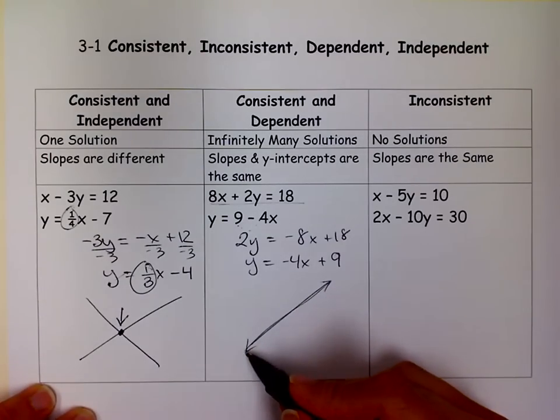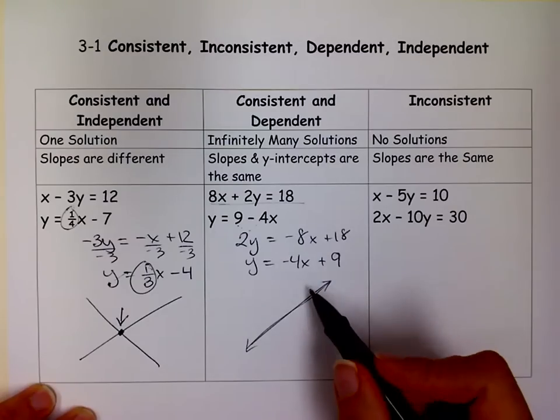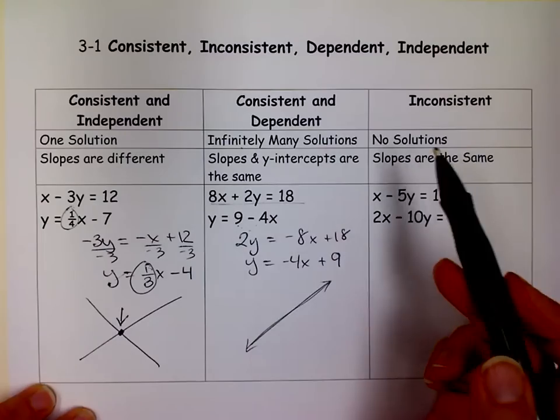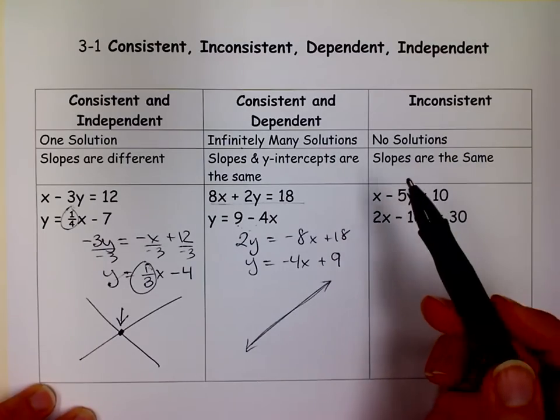And since the lines have an infinite amount of points, we say that the solution to this system has infinitely many solutions.